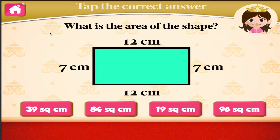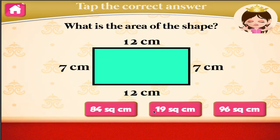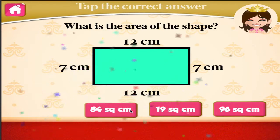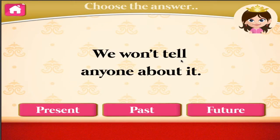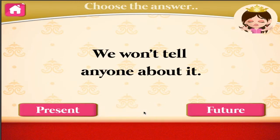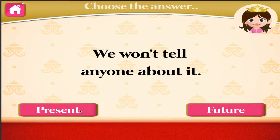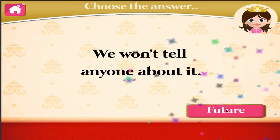What is the area of the shape? Uh-oh, it's not that one. Is the sentence in past, present, or future tense? Uh-oh, it's not that one. Right on!